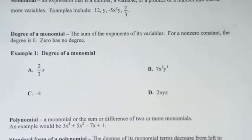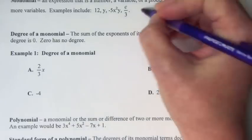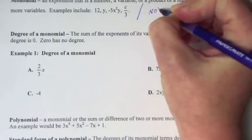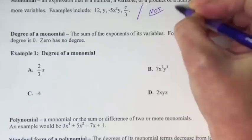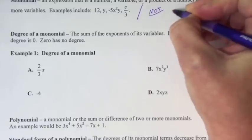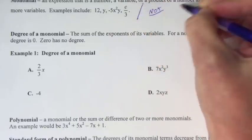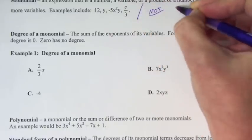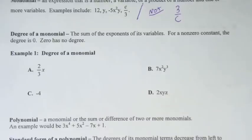Now, some things that are not monomials. If we had switched that c over 3 and made it 3 over c, that's not a monomial, because the c is in the denominator. The variable does have to be on top for it to be a monomial.